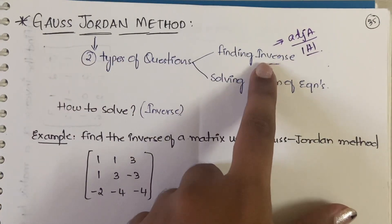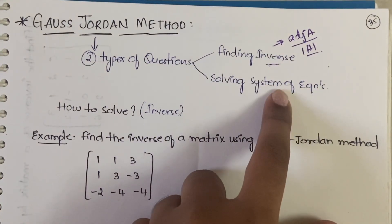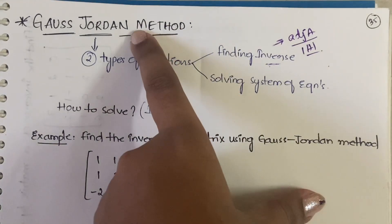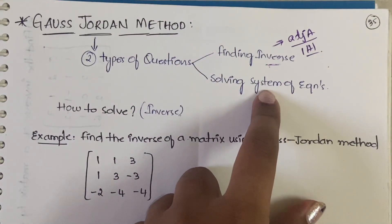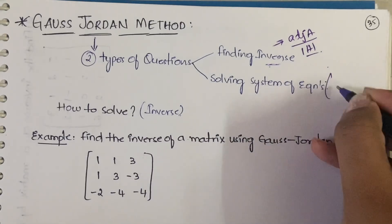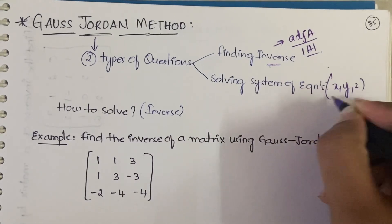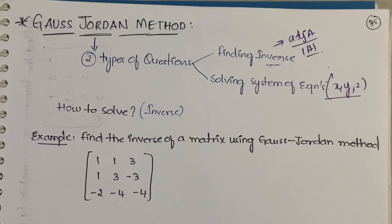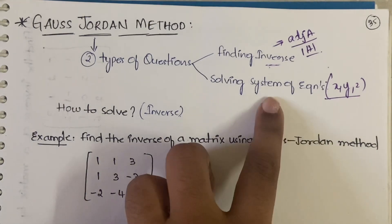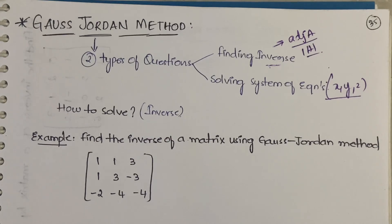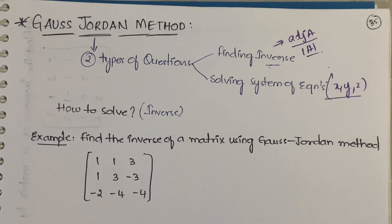Along with finding the inverse, you can also solve a system of equations using this method. Solving a system of equations means finding the values of x, y, z — you'll be given three equations with three unknowns and you have to find those unknown values. There are many methods to solve systems of equations, and we'll be seeing example questions.